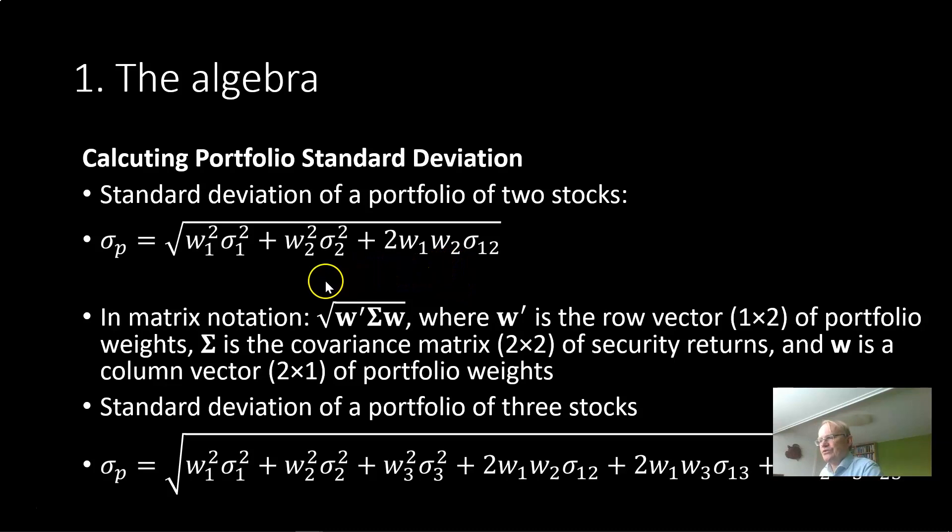If you want to write that in matrix notation you would take the square root of a row vector of portfolio weights times the covariance matrix times a column vector of portfolio weights. The apostrophe here indicates essentially that we're talking about a row vector. The covariance matrix is a square matrix in this case with dimension two by two and w is again a column vector of portfolio weights.